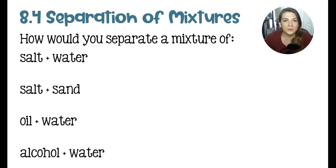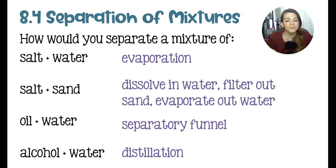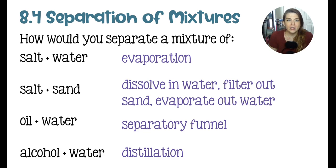Last in the matter section is separation of mixtures. The best way to separate salt and water is evaporation — the water evaporates and the salt is left behind in the evaporating dish. For sand and salt, the grains are roughly the same size so you can't sift them. Instead, dissolve the whole sample in water — the salt dissolves and the sand doesn't. Then use filtration to catch the sand in a filter while the salt water drips through. Finally, evaporate the salt water to recover the salt.